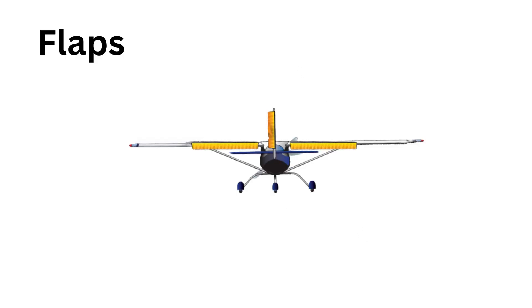Flaps are located on the trailing edge on the inside part of each wing. Flaps increase lift and induce drag, which helps an airplane make steeper approaches without increasing airspeed when landing.